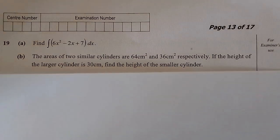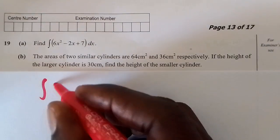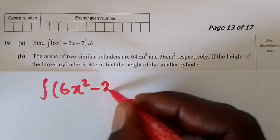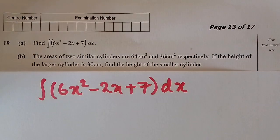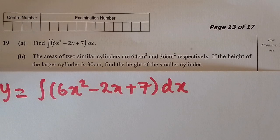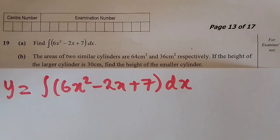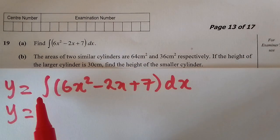For the first part, we start by writing down the question: find the integral of 6x squared minus 2x plus 7 in brackets with respect to x. We'll introduce y equals here, since we want to find the original equation. In the next stage we write y equals and begin the integration process, removing the integral symbol.